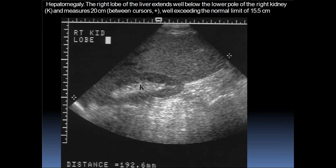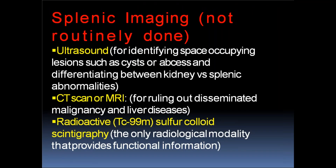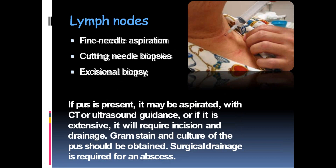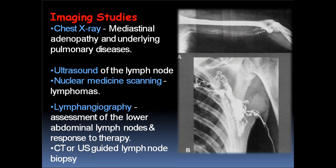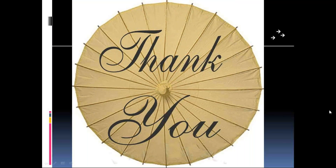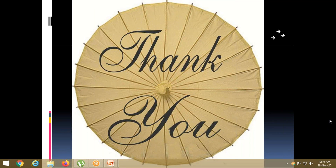Splenic imaging: not routinely done; ultrasound, CT, or MRI; radioactive technetium-99m sulphur colloid scintigraphy may be required. Lymph node investigations: fine needle aspiration cytology, biopsies, and excision biopsy using ultrasound guidance. Lymphangiogram for assessment of abdominal or axillary group of lymph nodes.